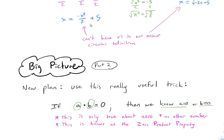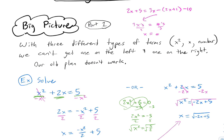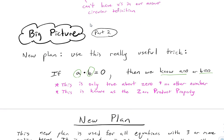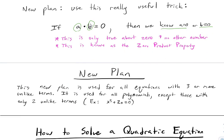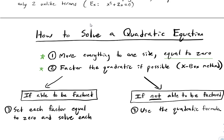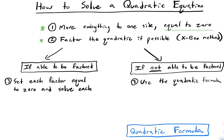We use that property to solve equations. About half the year we use our straightforward linear plan — all variables on the left, all numbers on the right, divide, done. Now we say let's use this plan: if two things multiply to get 0. Our new plan has two or three steps, but really two important ones: move everything to one side so it's equal to 0, and then factor it.